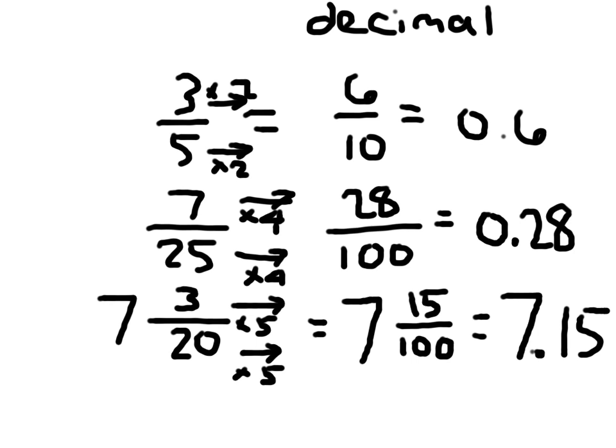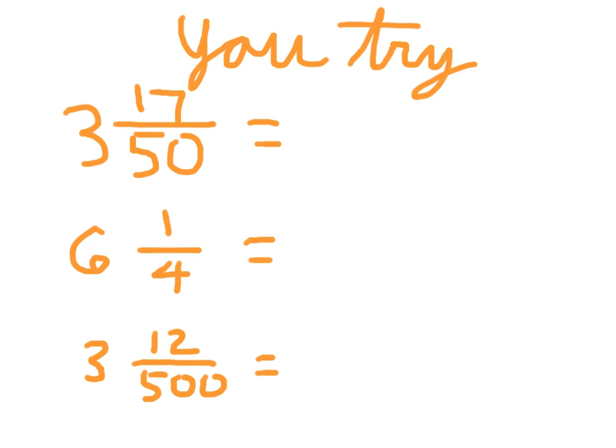So that's how you write a decimal equivalent. You need to find that denominator either tenths or hundreds. And that's not one hundredths, that's hundreds. Sorry about that. I misspoke.